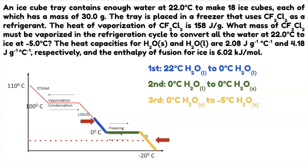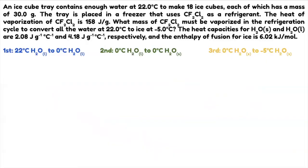Plateau means change in phase; slope means change in temperature. You should know the formulas by now. Since step one is a change in temperature, we use Q equals mCAT — mass times specific heat times change in temperature.